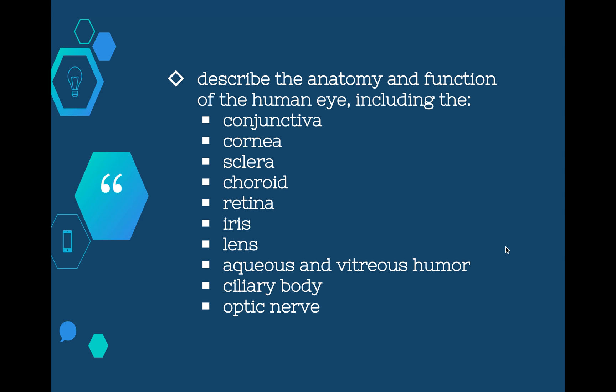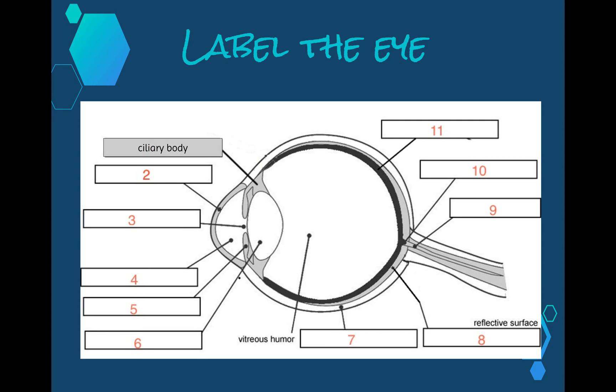Welcome to this video in the communication topic. This video is going to be looking at this stop point which seems quite big but it's actually pretty straightforward once we get stuck into it. It says to describe the anatomy and function of the human eye, including a whole range of different parts that we're going to look at individually in terms of their structure and function. Let's have a look at what the eye looks like.